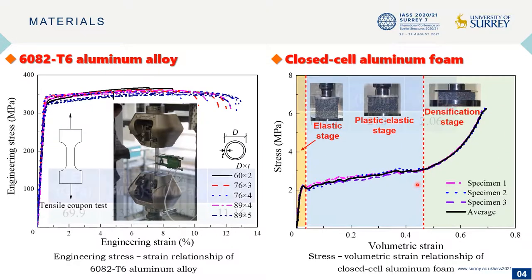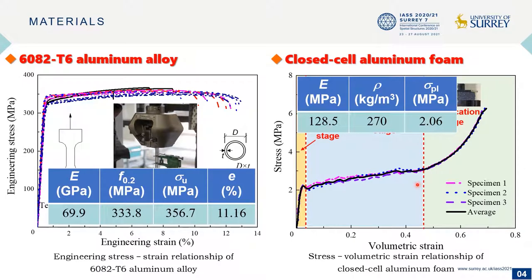The results showed that the elastic modulus of the aluminum alloy is approximately one-third of the elastic modulus of steel, and the yield strength and ultimate strength of the aluminum alloy are similar to those of Q235 steel.